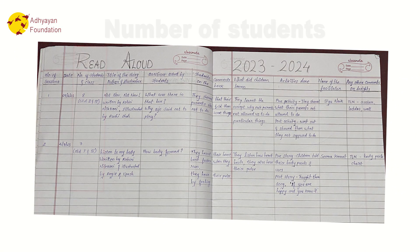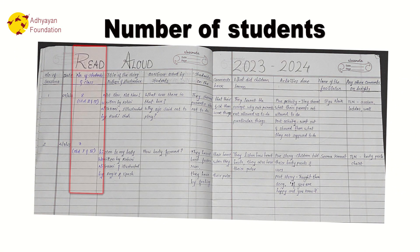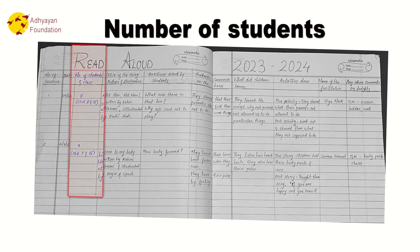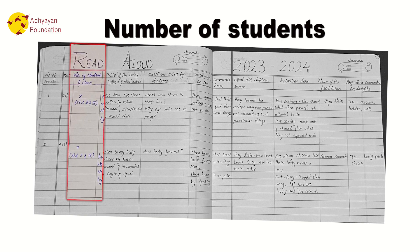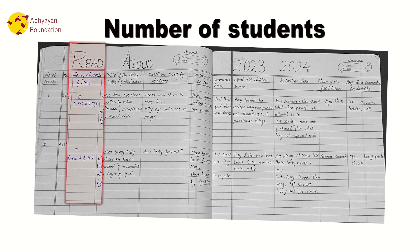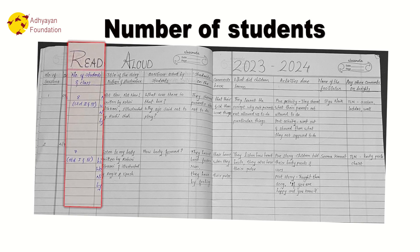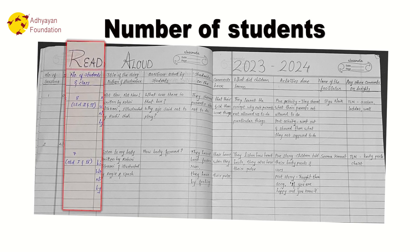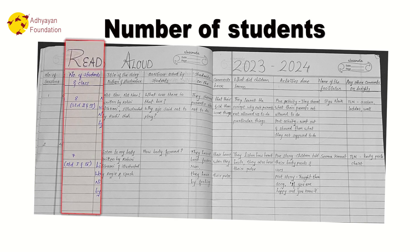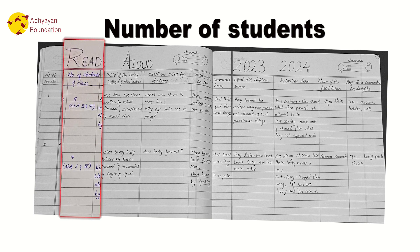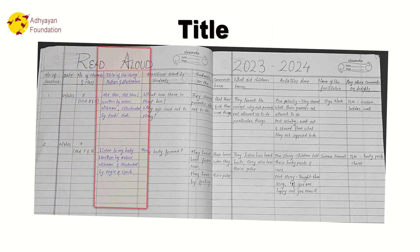The second field is the number of students. The class you are taking — you have to write the name and number of students. Then comes the title of the story, the author, and the illustrator.